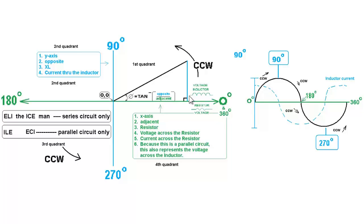To recap: the vertical blue axis is the y-axis, representing the opposite side — the current through the inductor. This chart shows in detail how you derive the relationship between current and voltage, find the angle, and how the x-y coordinate relates to a sine wave. The horizontal axis in green also represents the time domain.